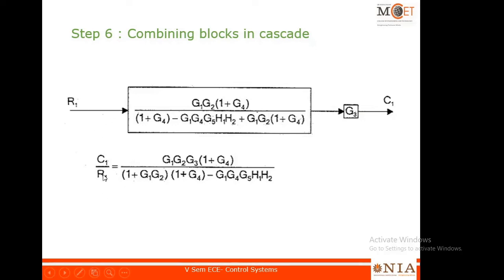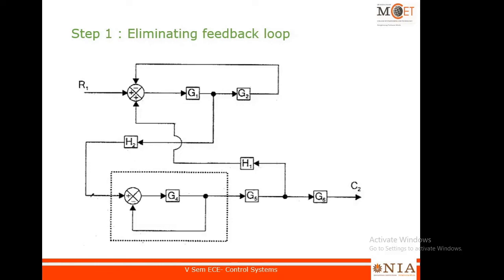So now we have computed C1/R1. We will now move on to find C2/R1. As I said, the output is C2 and the input is R1. I have to remove R2 as usual — assume R2 input as zero — and I should not bother about C1. C1 was tapped from a certain point through a block, so I have removed that wing for C1 and also R2.